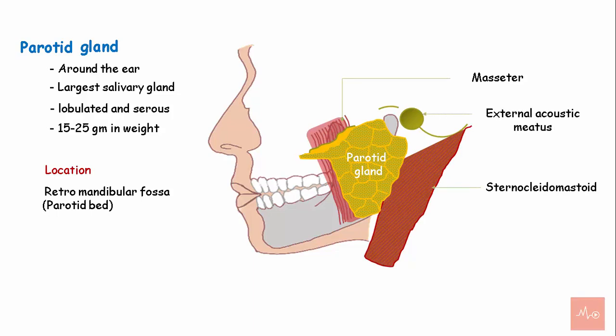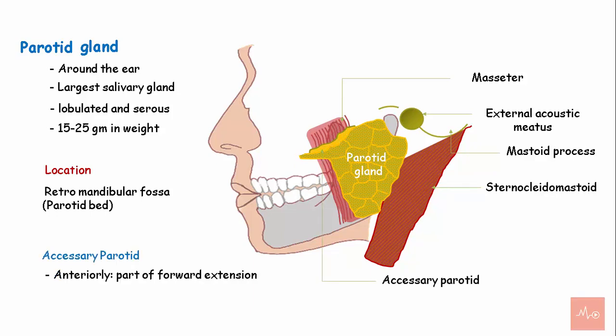Superior to the gland lies the mastoid process. The accessory parotid gland lies anterior to the parotid gland and is a part of the forward extension of the gland which lies above the parotid duct.